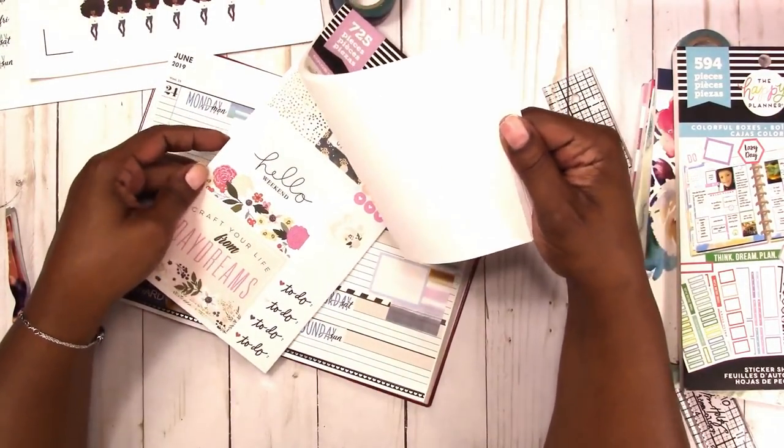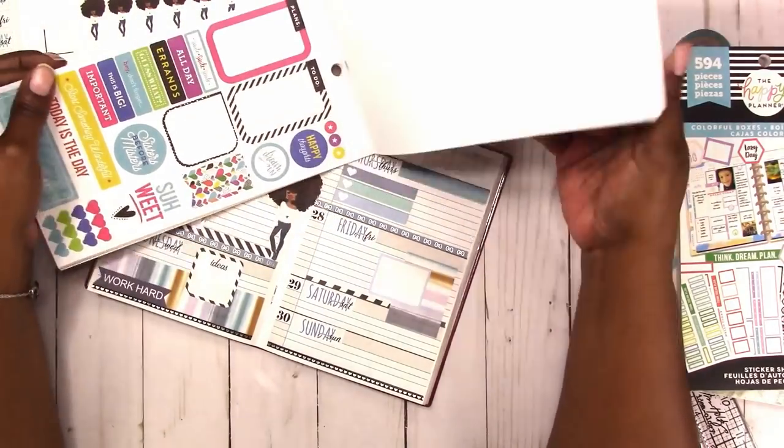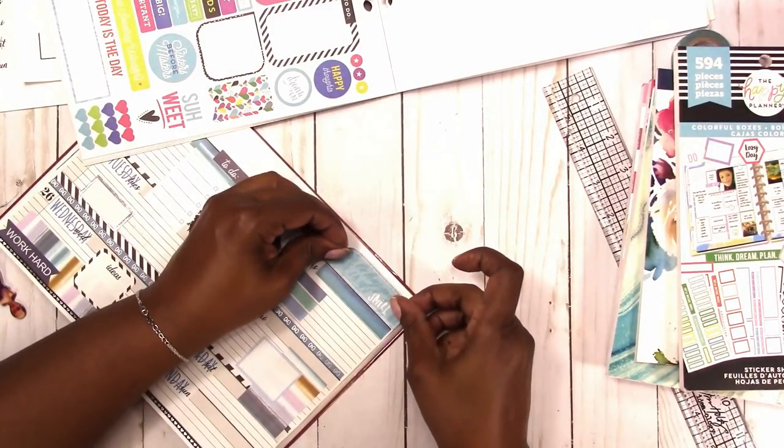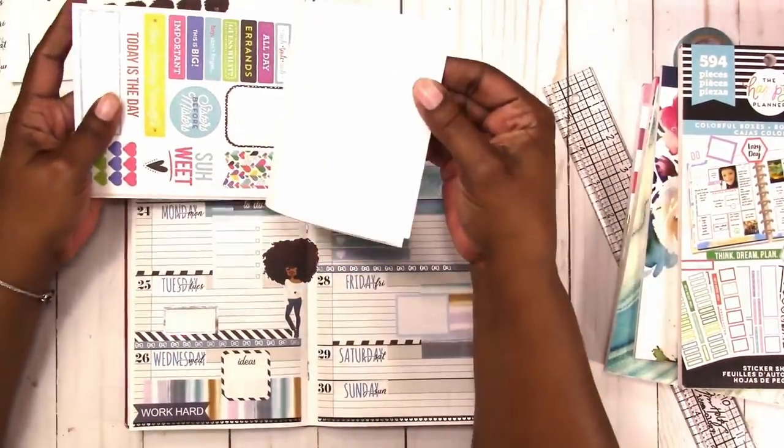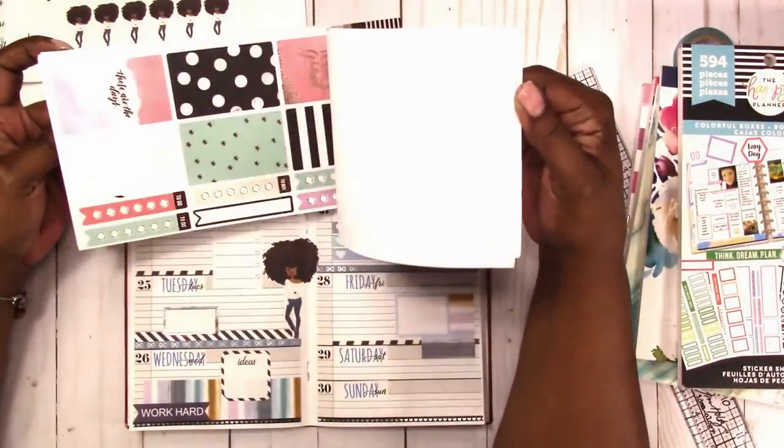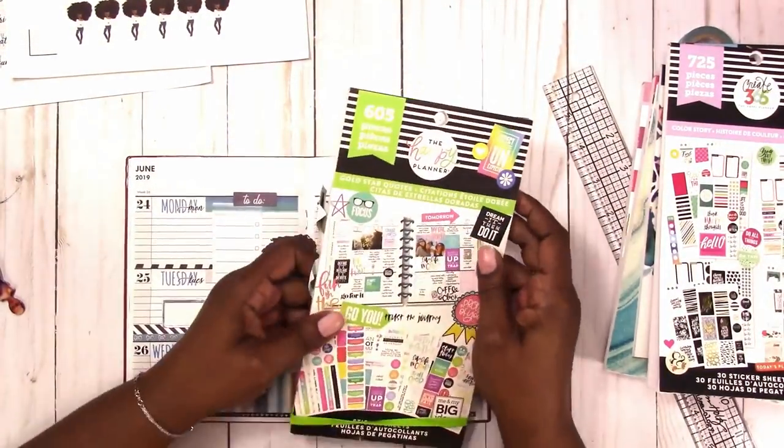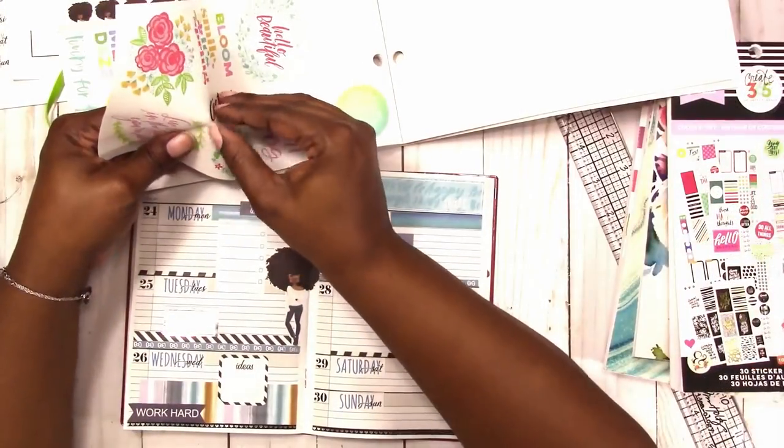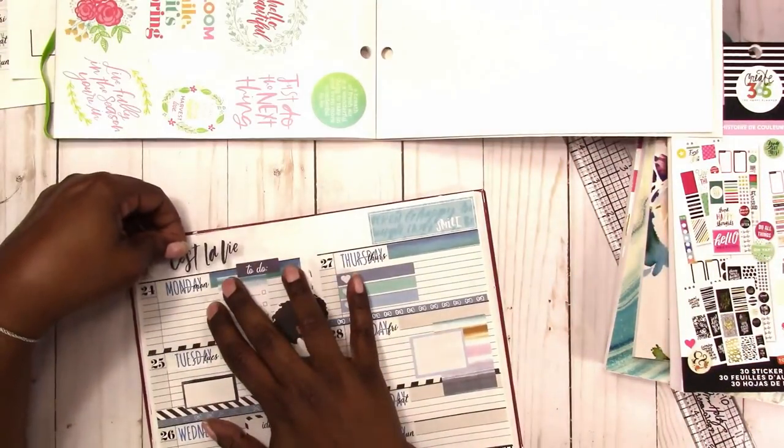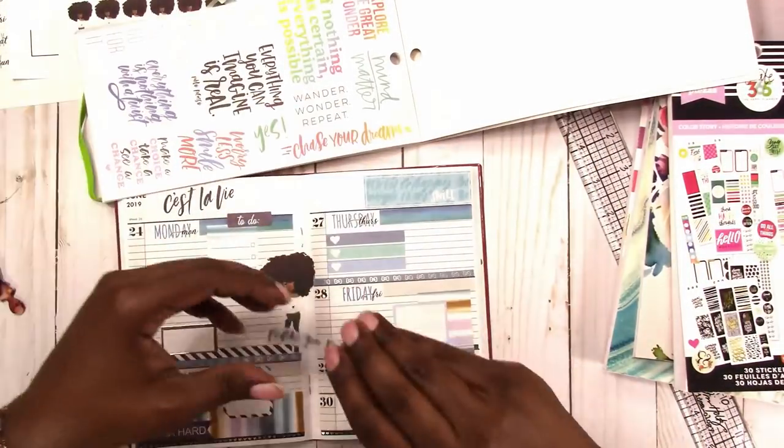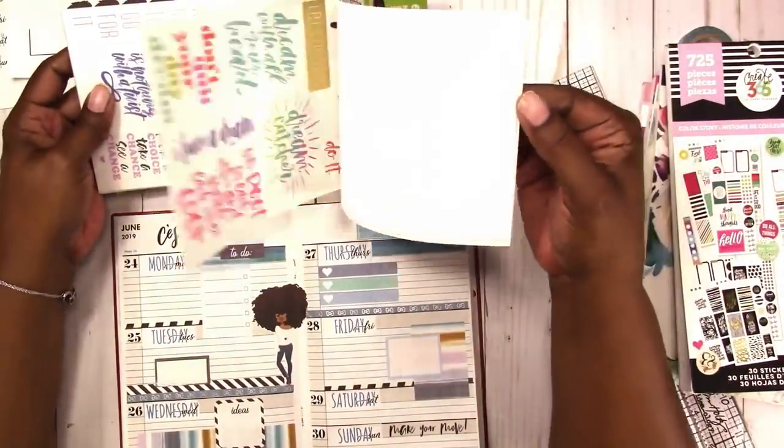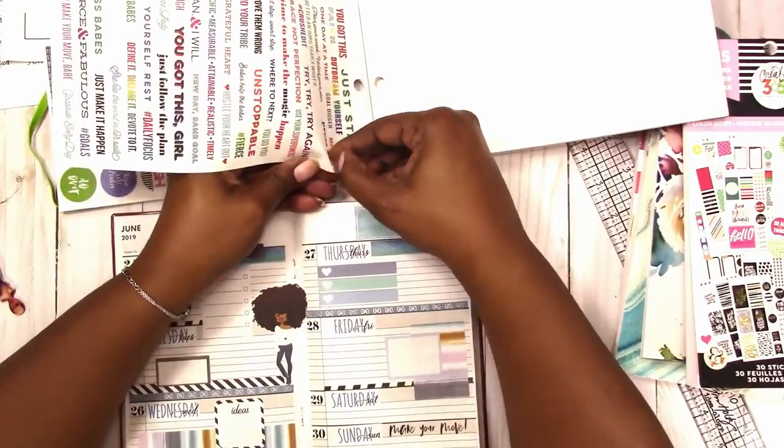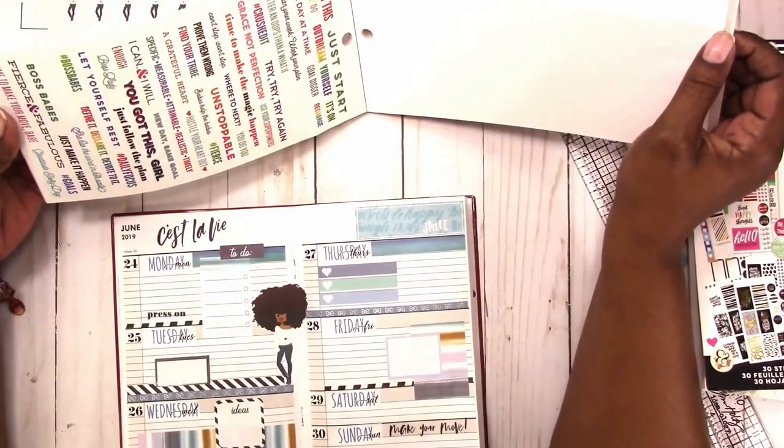This is Color Story. And I'm just going to use this smile sticker to cover up the calendars up at the top. And this is Gold Star Quotes. And I'm just looking for a nice quote to put at the top left. I'm going to use the C'est La Vie. Then down on Sunday, I'm going to put Make Your Move. Then on Monday, I put Press On. I need inspiration to carry me through the week.